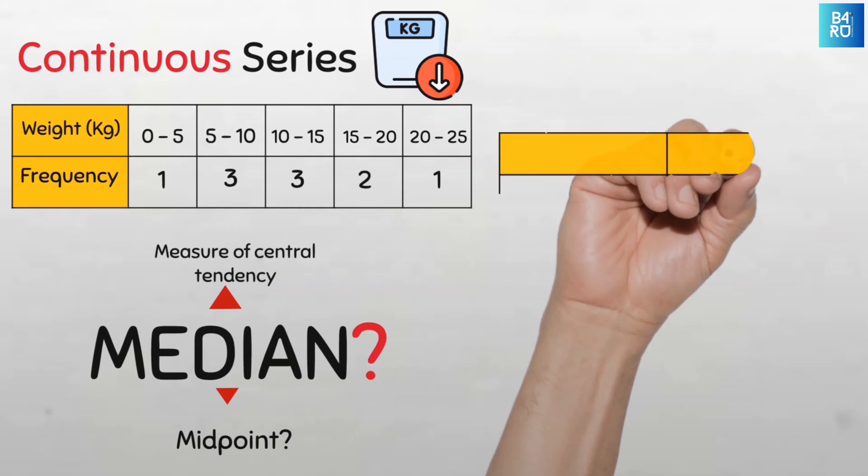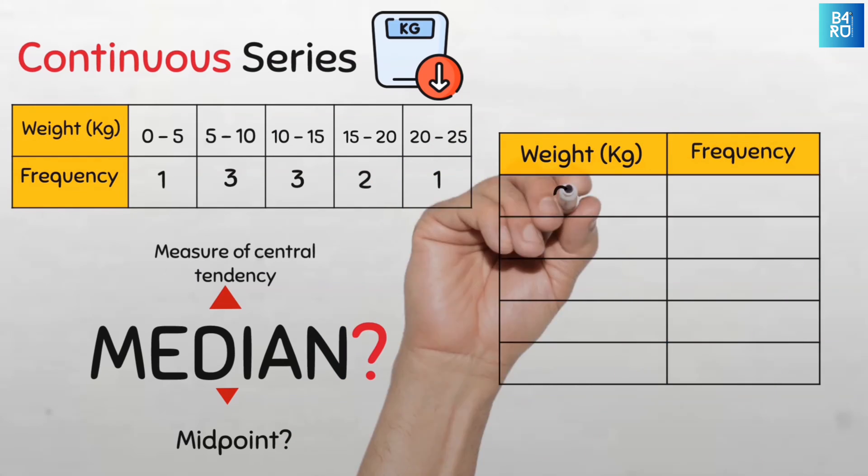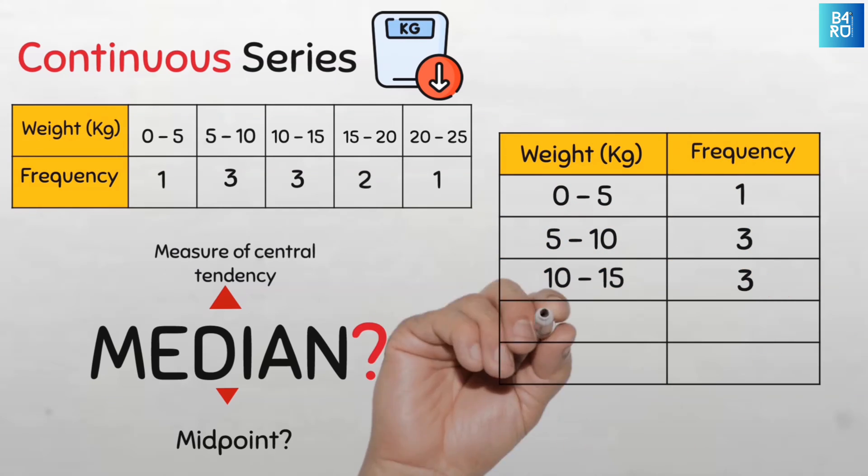Let us modify this table a bit to make it easy for us to compute the median. So let's put the weights in kg here and then the frequency here and then we arrange all the data in a vertical manner. Awesome, this is better.